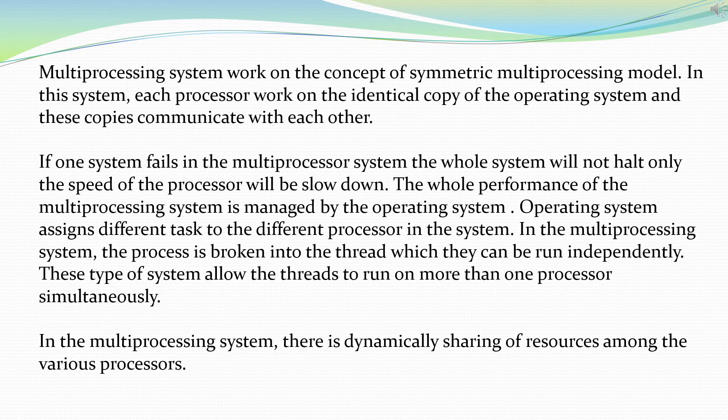Multiprocessing systems work on the concept of the symmetric multiprocessing model. In this system, each processor works on an identical copy of the operating system and these copies communicate with each other. With the help of this system, we can save money because peripherals, power supplies, and other devices are shared. We can do more work in a short period of time. If one system fails, the whole system will not halt — only the speed of the processor will slow down.